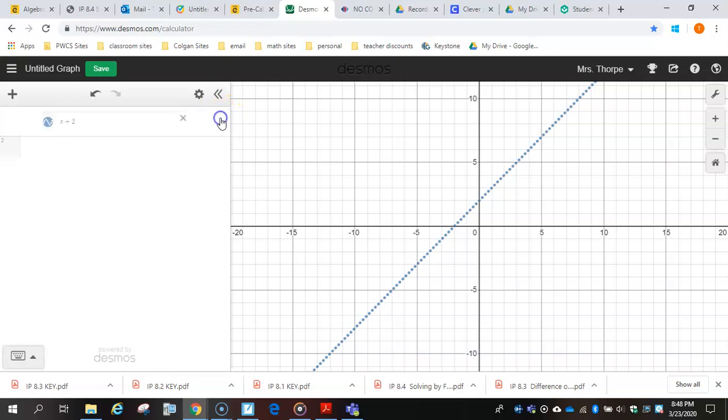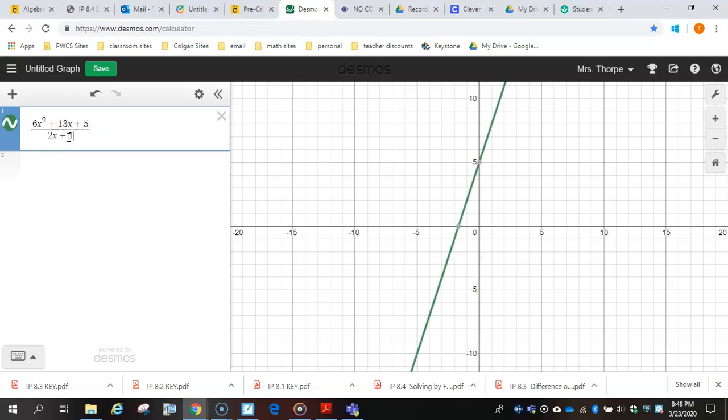And we can do that again. So this is another example from the notes. 6x squared plus 13x plus 5, all over 2x plus 1.